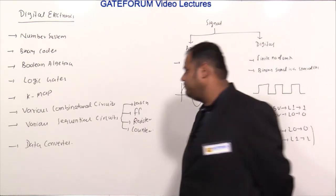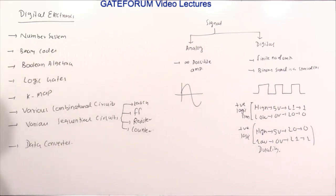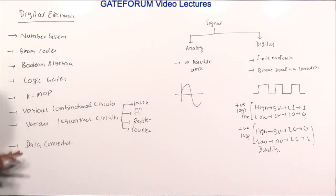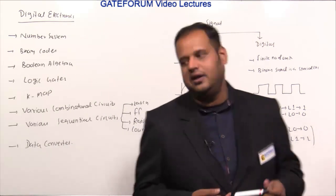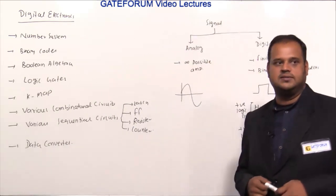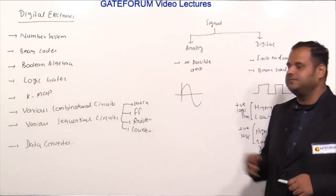The various chapters we will cover in this course start with number systems, then binary codes, then Boolean algebra, then logic gates, KMAP, various combinational circuits, various sequential circuits, and data converters. This syllabus is a common syllabus across almost all Indian universities and even for competitive exams.